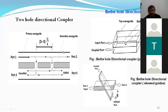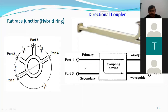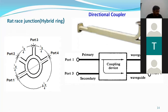In the directional coupler, there are some important parameters: directivity, isolation, and coupling factor. We will see these parameters in detail based on the basic directional coupler.